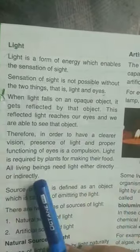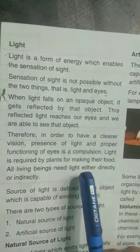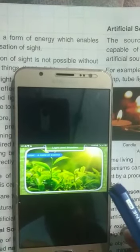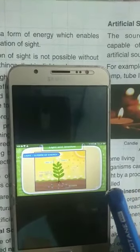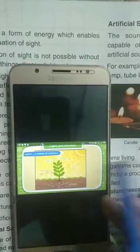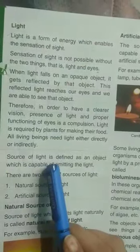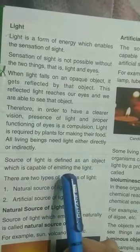Light is required by plants for making their food. All living beings need light either directly or indirectly. Green plants make their food in the presence of sunlight; the energy of the sun used by plants in that process is called photosynthesis. Sunlight is a form of energy that is essential for life on earth. A source of light is defined as an object which is capable of emitting light.